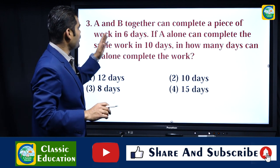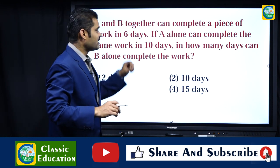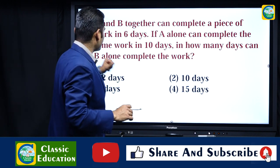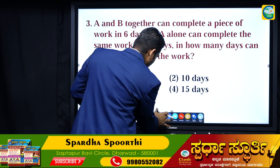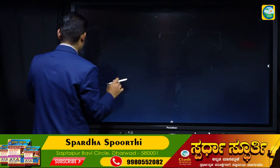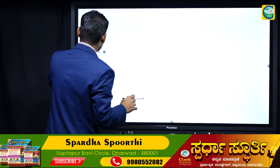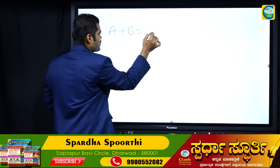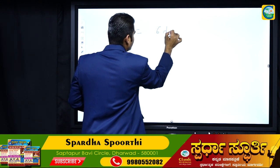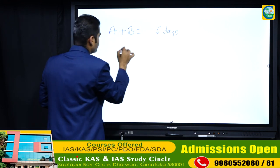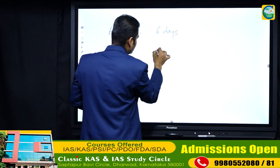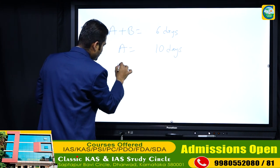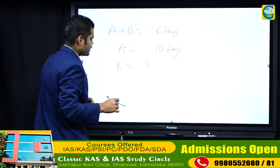Next question: If A and B together can complete a piece of work in 6 days, and A alone can complete the same work in 10 days, in how many days can B alone complete the work? We need to find the total number of days taken by B.